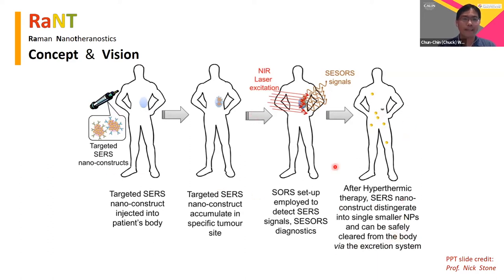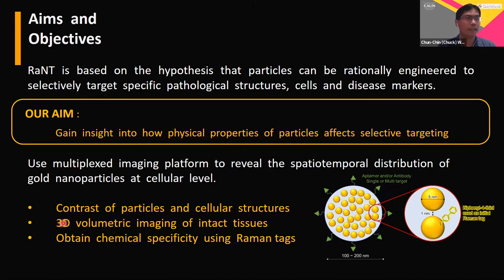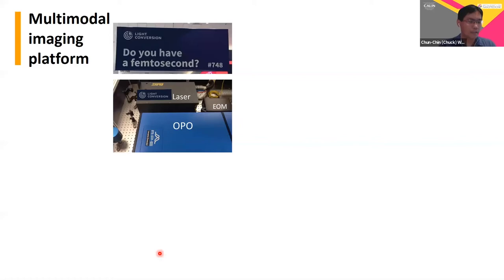Before we jump into clinical trials, from a microscopic point of view we need to understand how the physical properties of gold nanoparticles affect selective targeting. We proposed to use a multiplexed imaging platform to review the spectral and temporal distribution of gold nanoparticles at the cellular level. Our system needs to highlight the contrast of gold nanoparticles and cellular features, provide 3D optical sectioning to determine particle location, and if we add tiny Raman tags, perform chemically selective imaging.